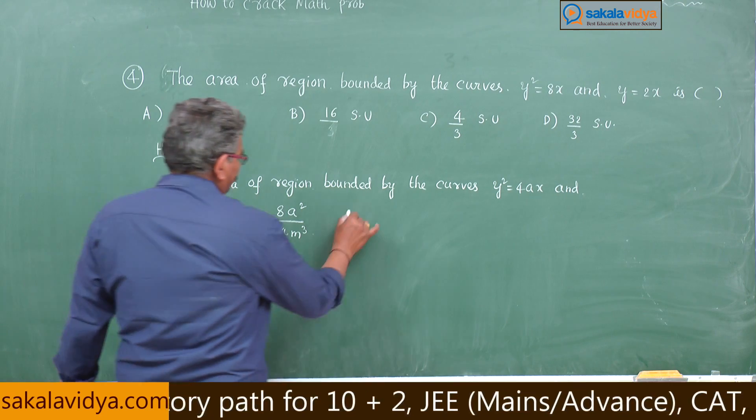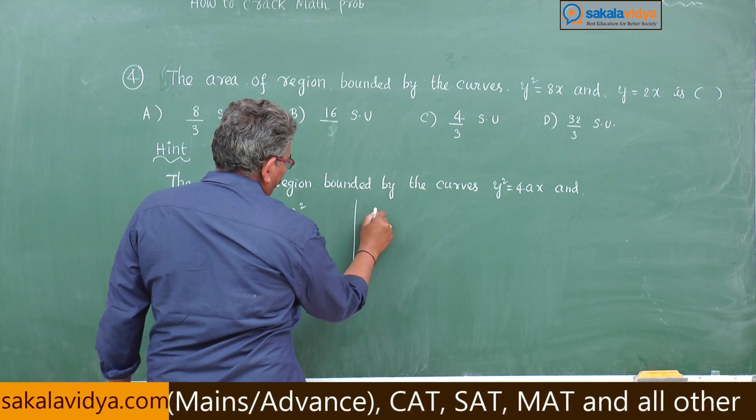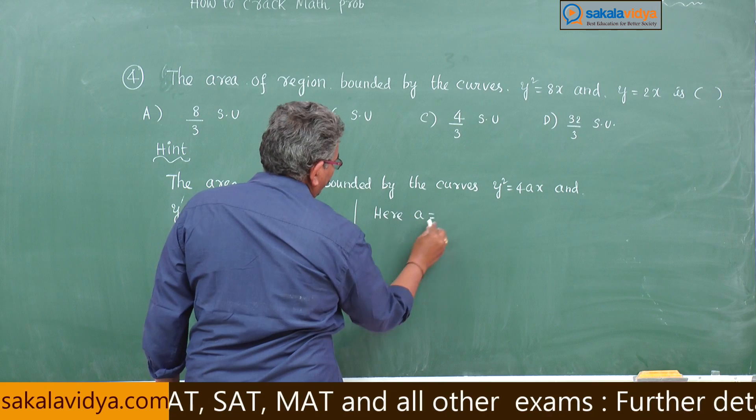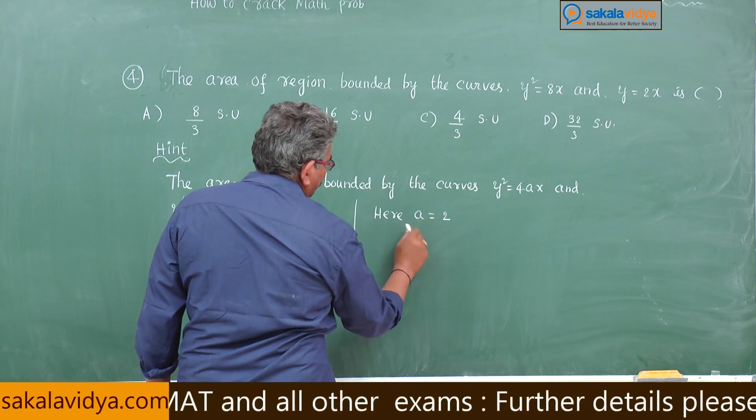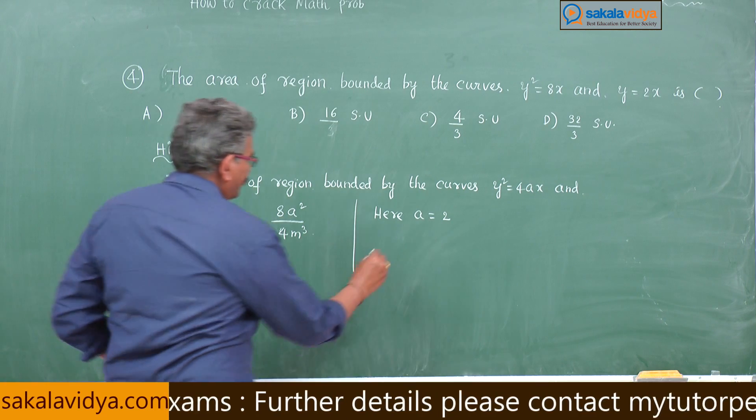Here y square 4ax compared to y square is equal to 8x, a is equal to 2, whereas y is equal to mx compared to y is equal to 2x, m is equal to 2.